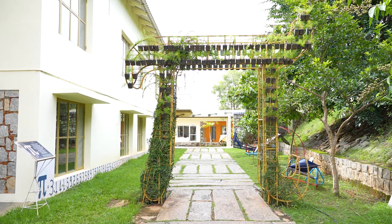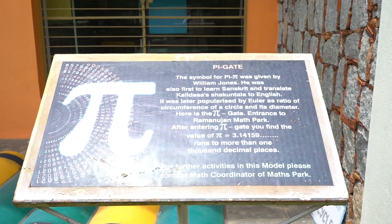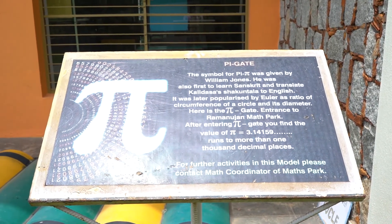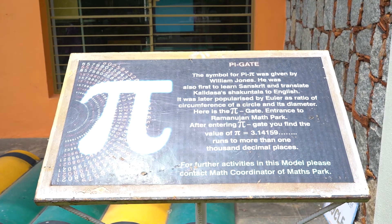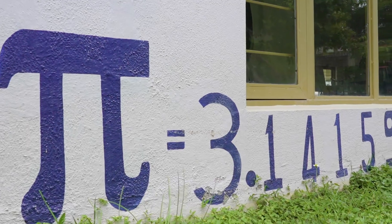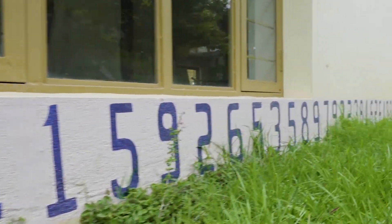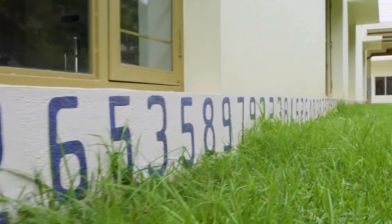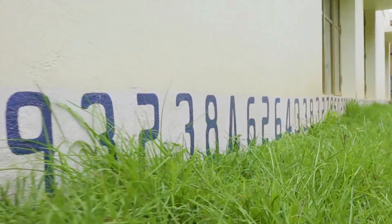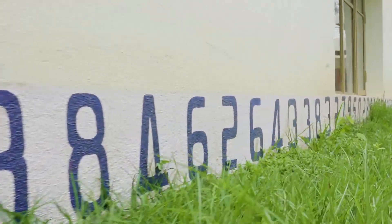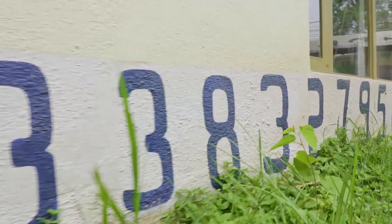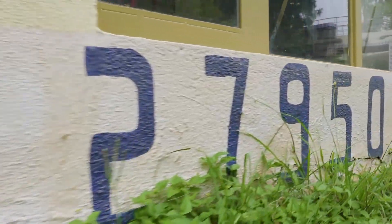Here we are entering the Pi gate to the math park. The Pi gate is about 11 feet in height. The symbol of Pi was also given by Euler. To the left of this Pi gate, the value of Pi in decimal form is written, and this runs to 1000 digits. We are entering the Pi gate to a world of math park.